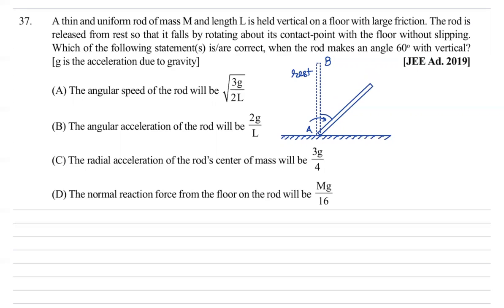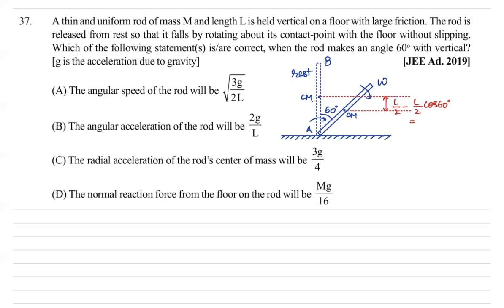When the rod makes an angle of 60 degrees with the vertical, we need to find the angular speed and angular acceleration. This is a standard question. First, we find omega using kinetic energy gain due to loss in potential energy. For potential energy loss, we need to find how much the center of mass has descended — that distance is l/2 minus l/2·cos60, which equals l/4.